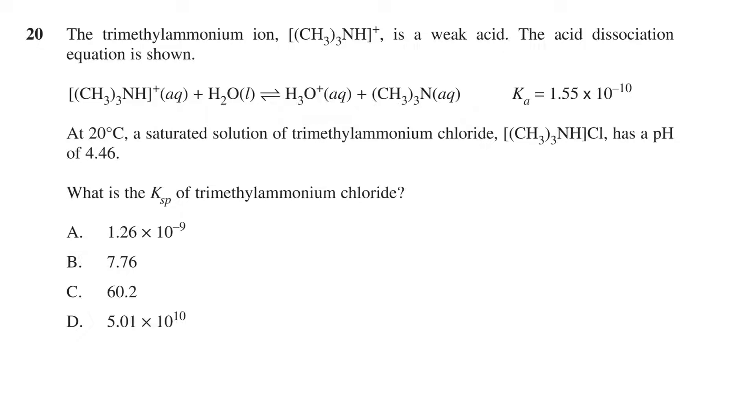This is followed by the reversible reaction together with the acid dissociation constant or Ka value. Then the question continues: at 20 degrees Celsius, a saturated solution of trimethylammonium chloride has a pH of 4.46. What is the Ksp of trimethylammonium chloride? This is followed by four values between 1.26 times 10 to the negative 9 to 5.01 times 10 to the 10 as options A through D.